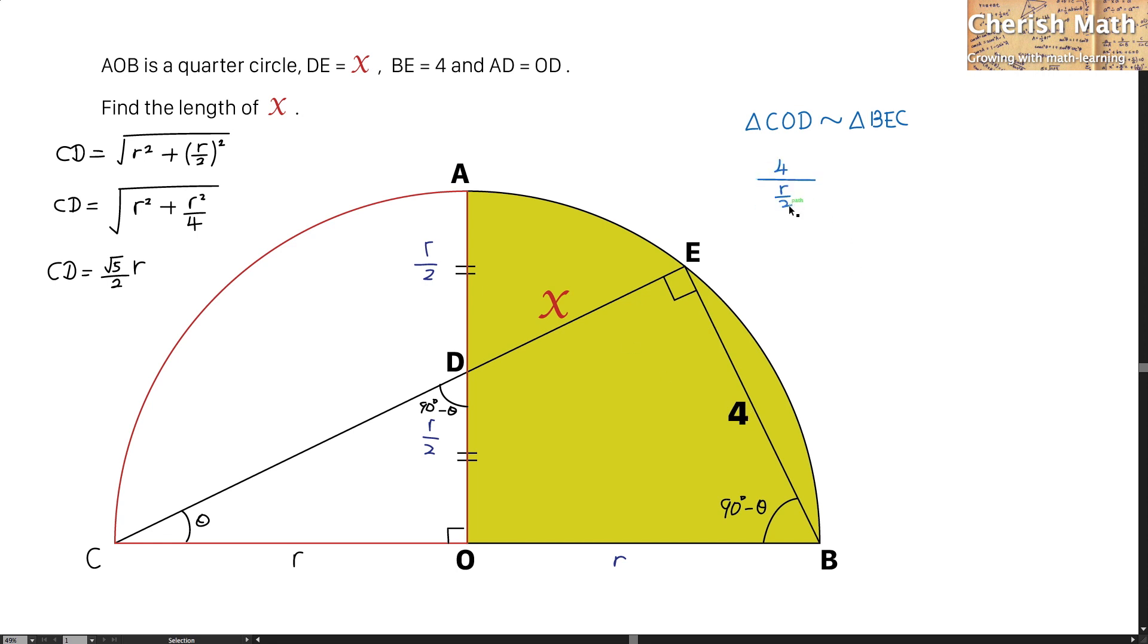And it is applied to 2R divided by the square root of 5 divided by 2 times R, which is the length of CD here.